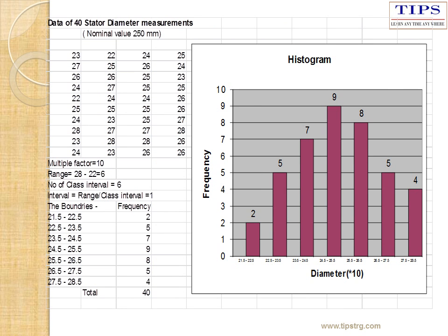An example of plotting a histogram is shown. Data is provided, groups are formed, and for each group the frequency of occurrences is calculated. The frequencies are plotted against the groups — on the x-axis the diameter is given, and on the y-axis the frequency of occurrences for each group is given. The chart is plotted using a bar chart. If the histogram forms a proper bell-shaped curve, that means the data is normally distributed.